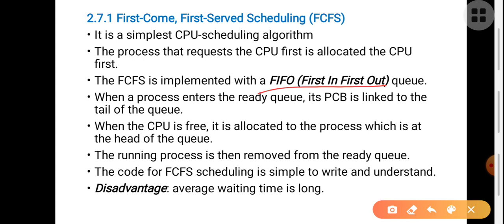In between the head and tail, intermediate processes may be present. The process running will be removed from the ready queue once the process at the head gets the opportunity to use the CPU. It is then removed from the queue and the next process comes to the head position. The code for FCFS scheduling is very simple to write and understand.